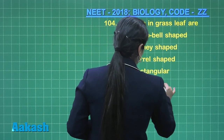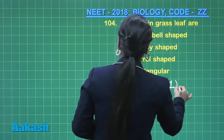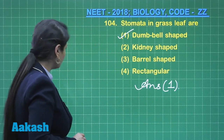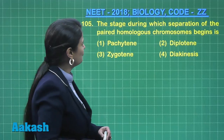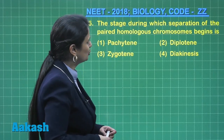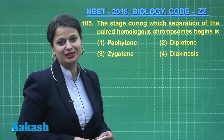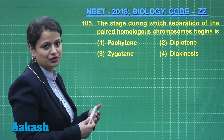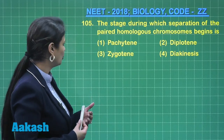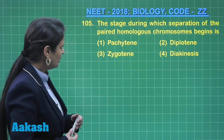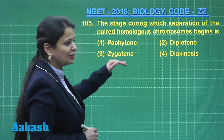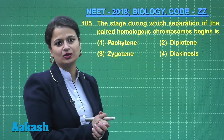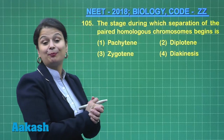Moving on to question number 105: the stage during which separation of paired homologous chromosomes begins. We need to look at the different stages of prophase I. Coming to the zygotene stage — in zygotene, homologous chromosomes pair together. There is no separation here; they pair with the help of the synaptonemal complex.